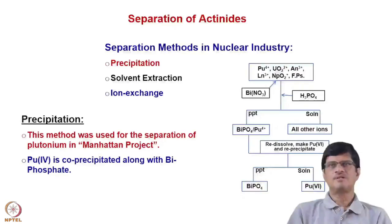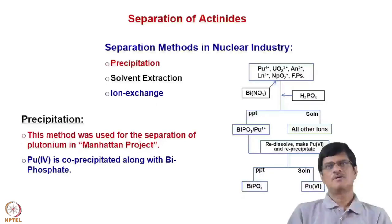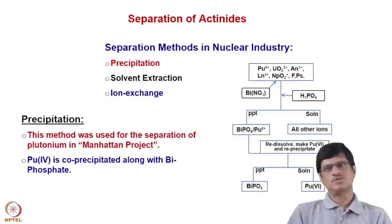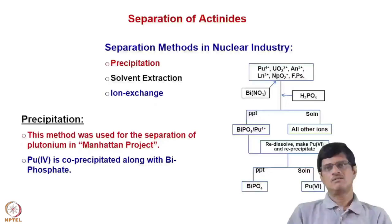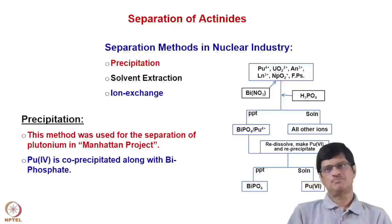There is a schematic of the bismuth phosphate precipitation process. You see a mixture of Pu(IV), UO2(2+), trivalent actinides, trivalent lanthanides, Np(V), and fission products. To this mixture, bismuth nitrate is added along with H3PO4. You get the precipitation of bismuth phosphate; all other ions remain in solution while Pu(IV) is precipitated. This precipitate can be filtered and re-dissolved to get a clear solution of plutonium(VI), and then it can be re-precipitated.